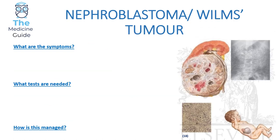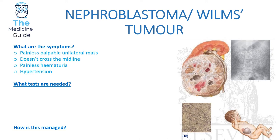Nephroblastoma, or Wilms tumour, is a tumour of the kidneys. Children will present with a painless palpable unilateral mass which does not cross the midline — this is a key feature which helps discriminate between Wilms tumour and neuroblastoma. The child will also suffer from painless haematuria and hypertension.